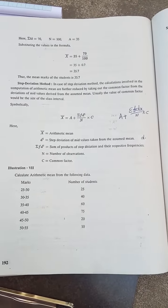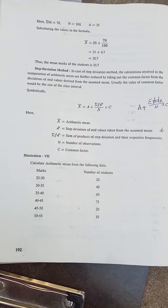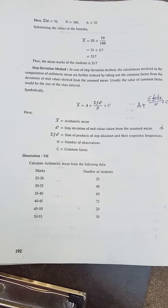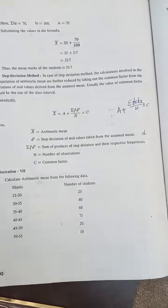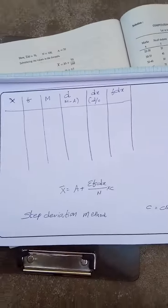If you see one problem here, 25 to 30, 30 to 35, 35 to 40, likewise. Okay, see, here, 5 is the class interval, 25 to 30, 30 to 35, you see.